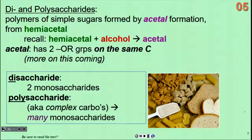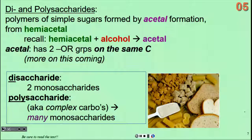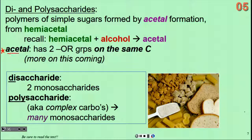Disaccharides and polysaccharides are what you get if you take more than one monosaccharide and put them together. The polymers that we see as polysaccharides are going to be formed by having an acetal formed between two sugars. A hemiacetal plus an alcohol, back in chapter 16, results in making an acetal.